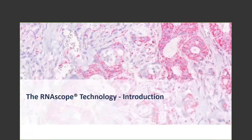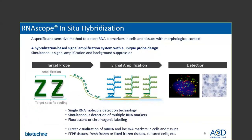So let's begin by asking the question: what is RNAscope? RNAscope assay is an in-situ hybridization technique that utilizes a unique double-Z target probe design followed by a signal amplification system that allows you to visualize a single mRNA transcript as a punctate dot. RNAscope allows both chromogenic and fluorescent labeling and is compatible with a wide variety of samples including FFPE, fixed frozen, fresh frozen, cultured, adherent and non-adherent cell lines.